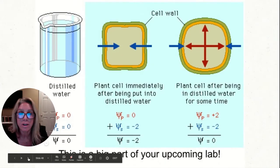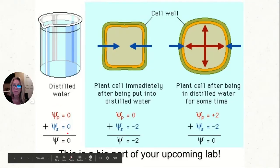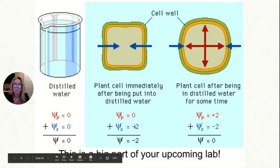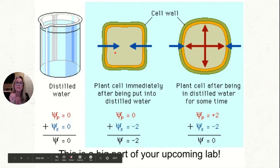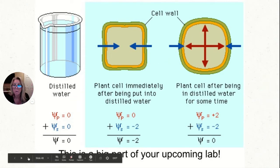Another scenario: pure distilled water in the beaker — pressure zero, solute potential zero, water potential zero. Drop a plant cell in — pressure potential is zero at first, but solute potential is negative 2, so water potential is negative 2. Water moves into the plant cell until the cell wall pushes back plus 2 bars. Positive 2 plus negative 2 equals zero — same as the distilled water, so net water flow stops.